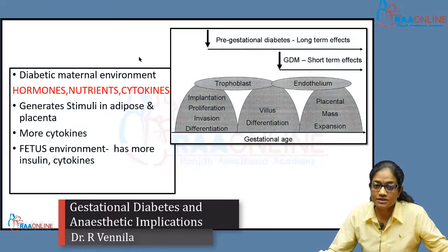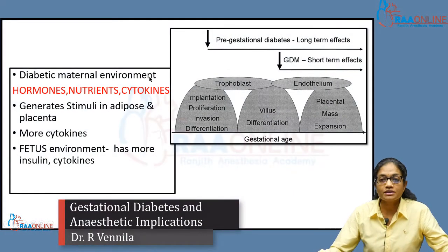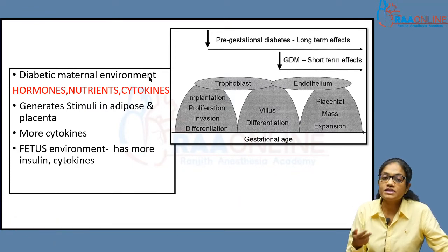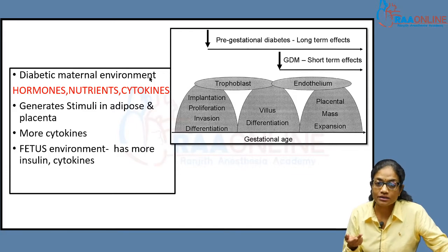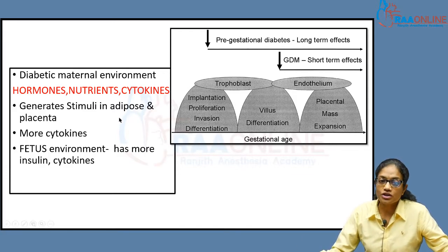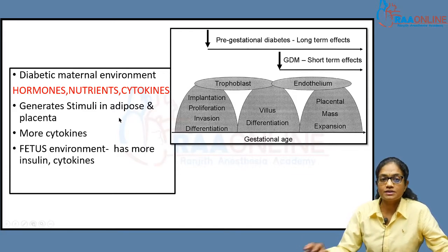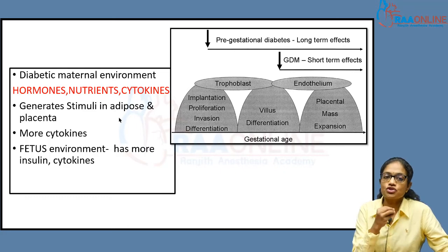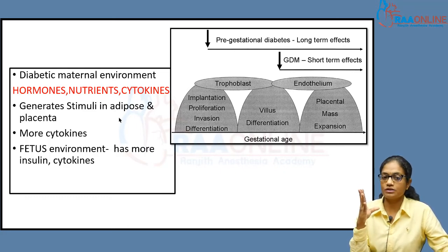On the mother's side, hormones, nutrients, and cytokines are released in an abnormal manner because of gestational diabetes. These generate a stimulus in the adipose tissue as well as the placenta. If the mother is obese, there is added risk. From the adipose tissue and the placenta, a significant number of cytokines are released.